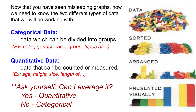For example, you can't really average your favorite color, so that would make it categorical. Whereas if you ask people their ages, you could take the average of people's ages, and that makes it quantitative data.